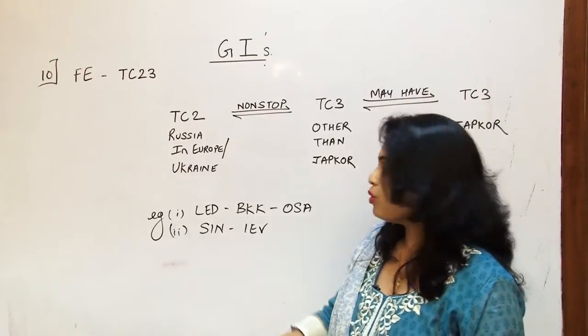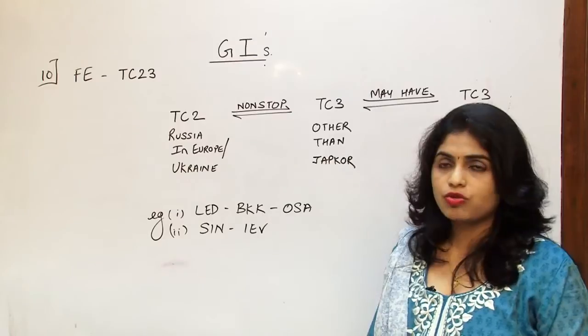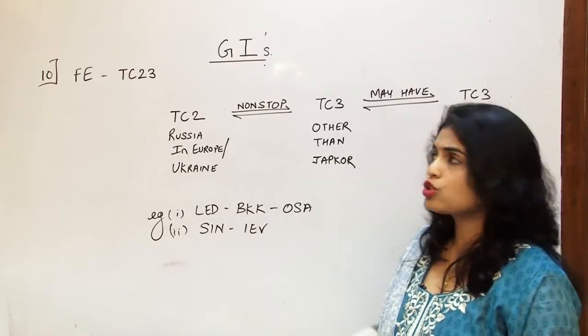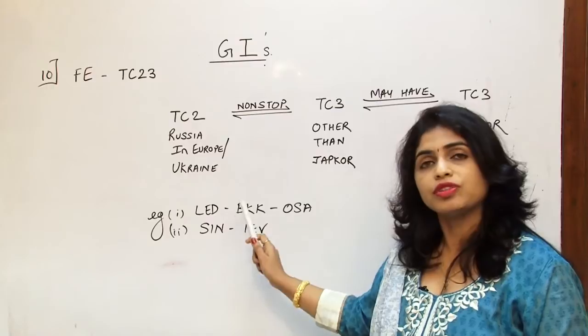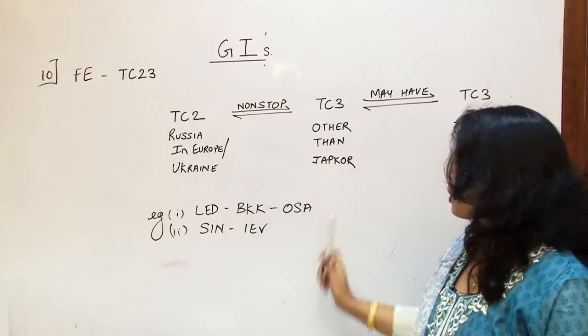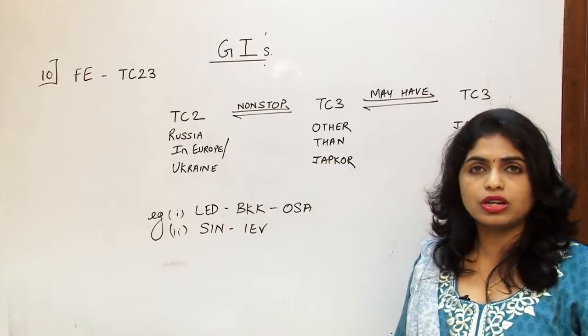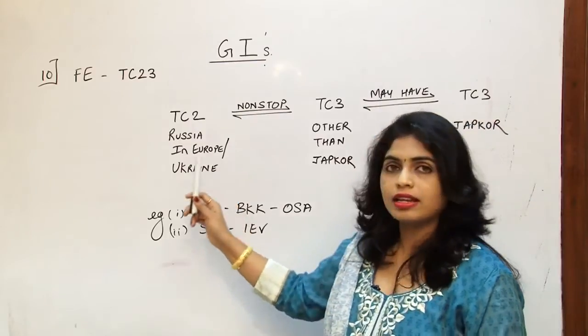So we have example one. St. Petersburg which is in Russia in Europe, non-stop service to Area 3 which is Bangkok which is Thailand which is not JAPCOR, and further ahead it is going to Osaka which is Japan JAPCOR. So this is an FE.